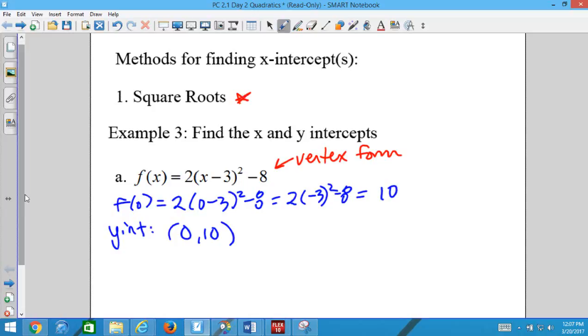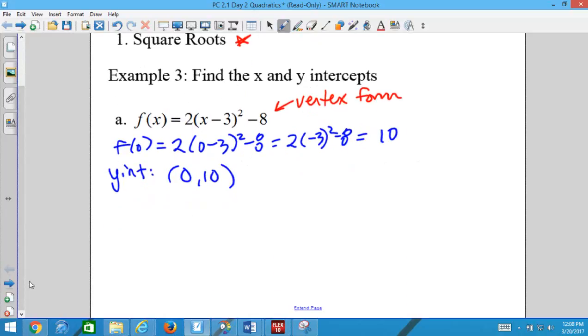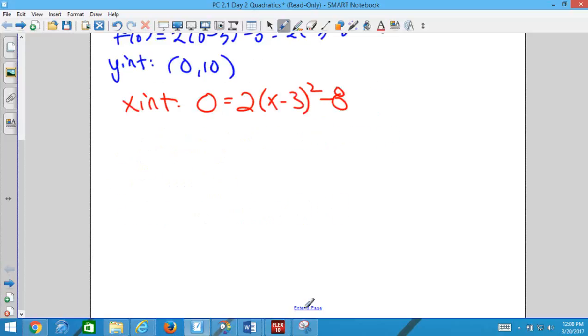So to do the x-intercepts, we're first going to plug in 0 for y. So we have 0 equals 2 times x minus 3 squared minus 8. Plug in 0 for y. Then we're going to solve for x. So by square root method, we're going to add the 8 to the other side. And then we're going to divide by 2. And we're basically isolating whatever's squared. And then once we have isolated what is squared, how do I get rid of squared?